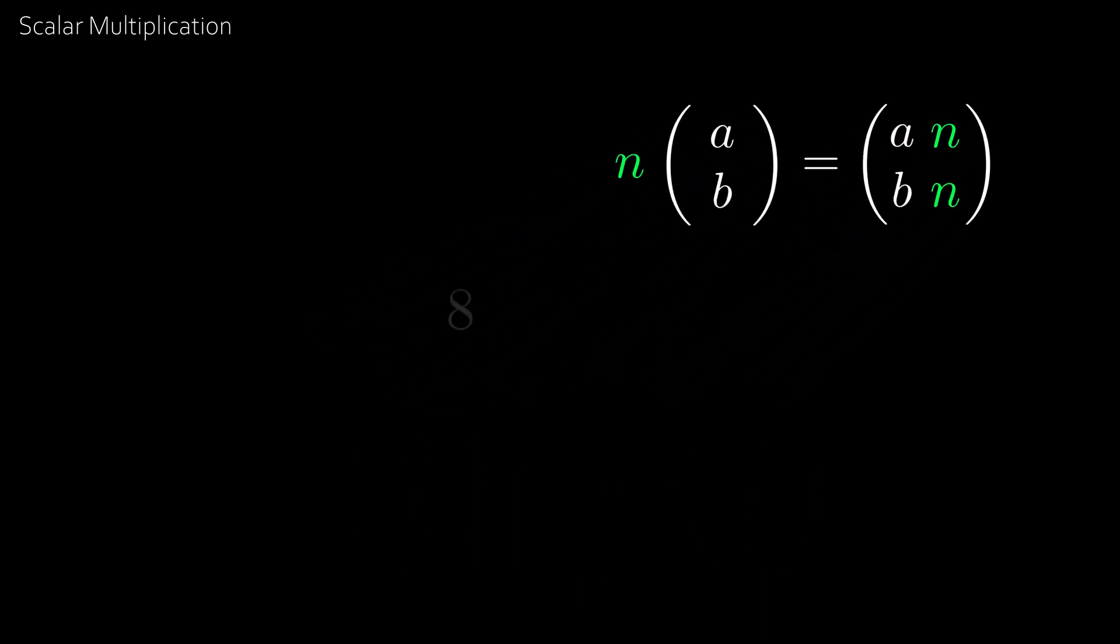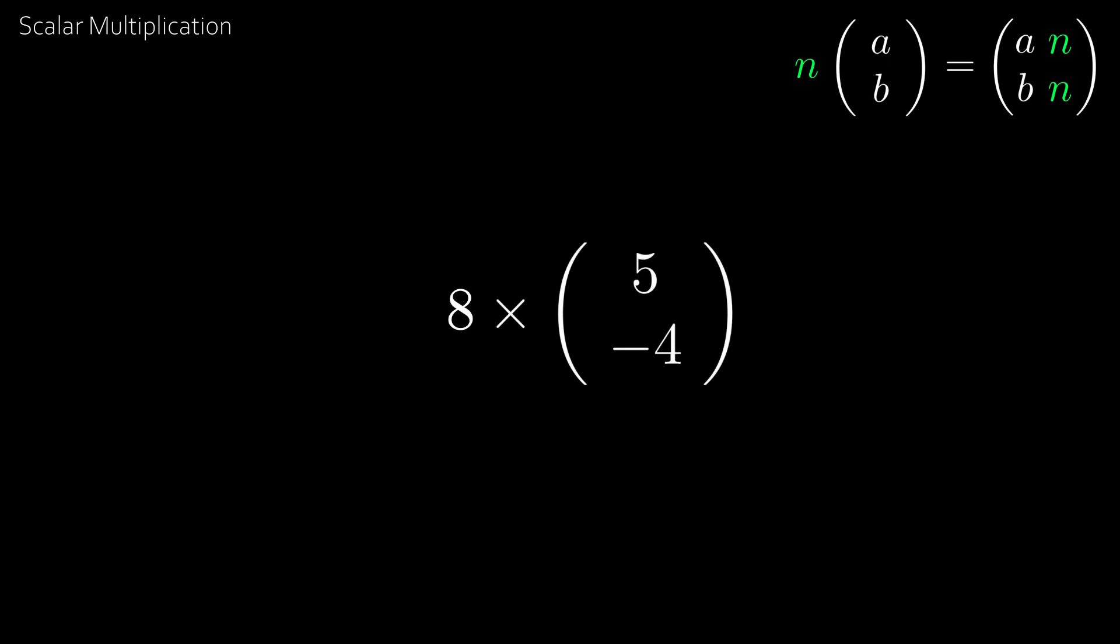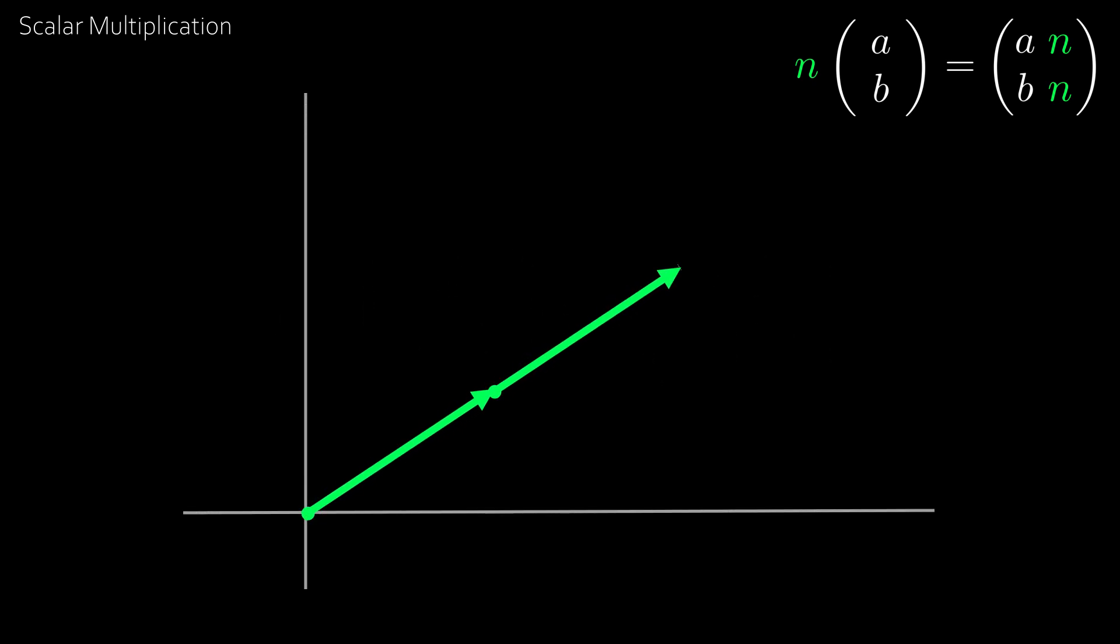So, for example, if you had 8 times 5 minus 4, instead of adding 5 minus 4 8 times, which is the same as adding 5 8 times, and then minus 4 8 times, this is just the same as multiplying 5 by 8 and minus 4 by 8, giving us 40 minus 32. And geometrically, it's quite simple to see what happens, as we just add the same vector multiple times. So, in this example, we would just be multiplying the original vector by 3. And you can see that the final vector is in the same direction, but just 3 times longer.